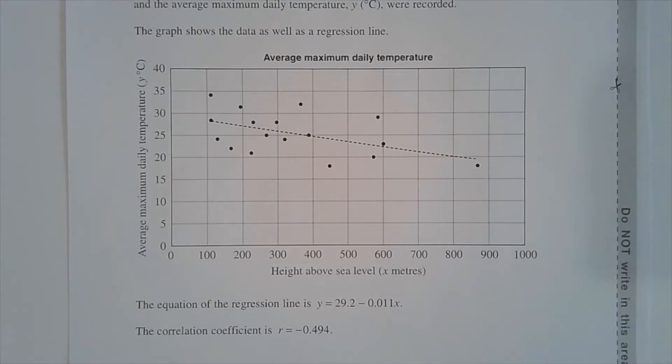The equation of the regression line is y equals 29.2 minus 0.011x. The correlation coefficient is r equals negative 0.494.